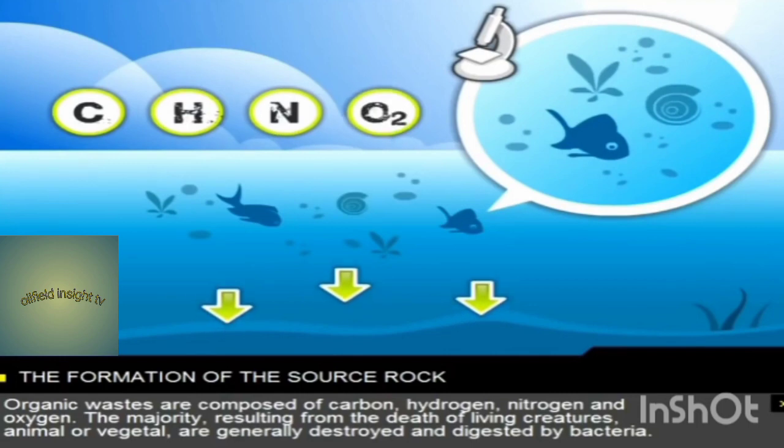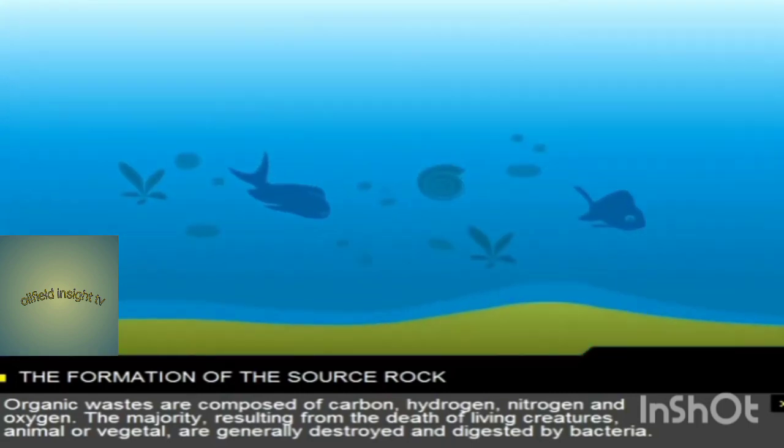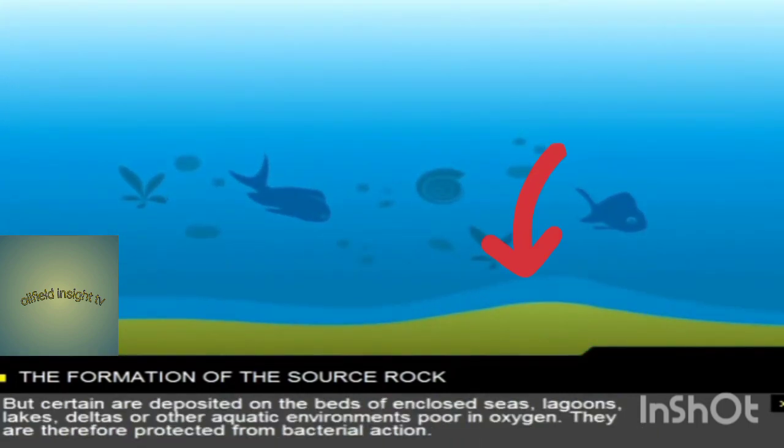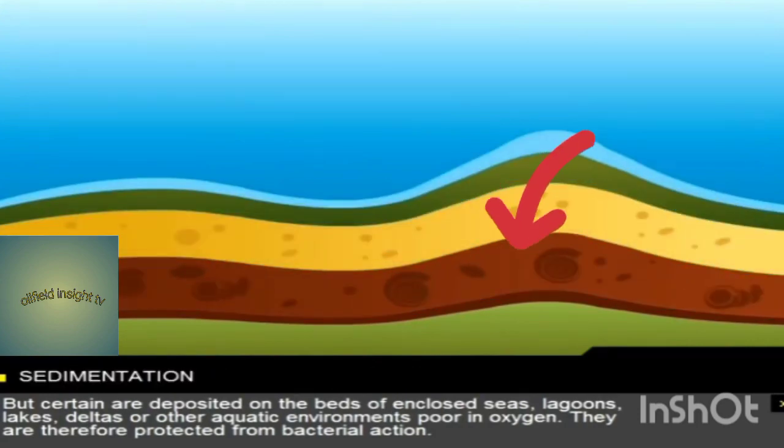Organic wastes are composed of carbon, hydrogen, nitrogen and oxygen. The majority resulting from the death of living creatures, animal or vegetable, are generally destroyed and digested by bacteria.